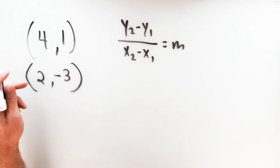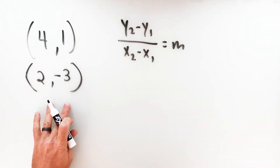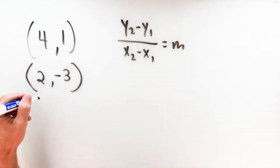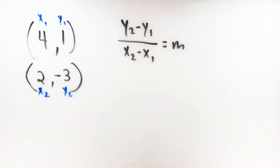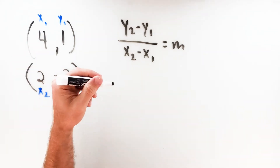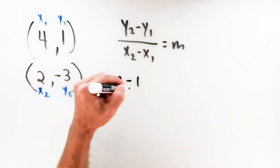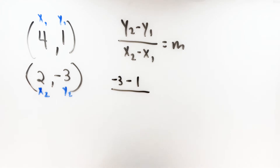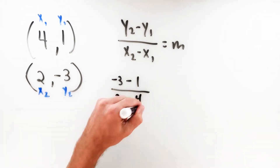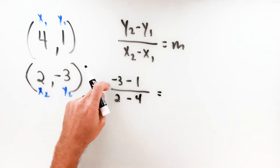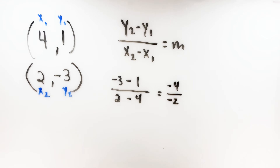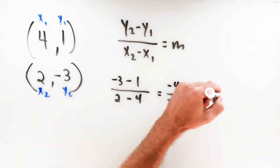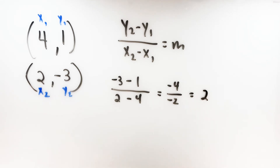Using the slope formula — y2 minus y1 over x2 minus x1 — it doesn't really matter which ones are the ones and which are the twos, as long as I stay consistent. Let's say the first point is x2, y2 and the second is x1, y1. Plugging in: y2 minus y1 is negative 3 minus 1, which is negative 4; x2 minus x1 is 2 minus 4, which is negative 2. Negative 4 over negative 2 equals 2. So my slope m equals 2.